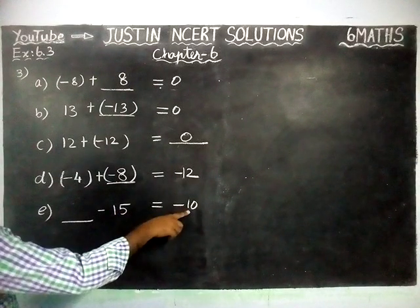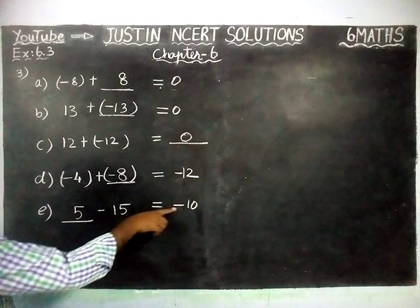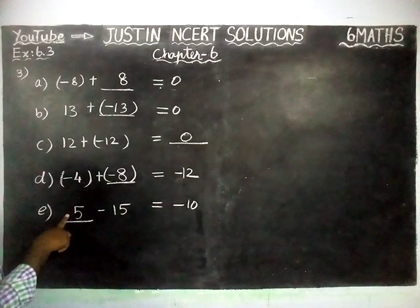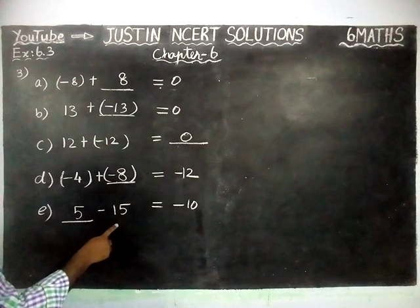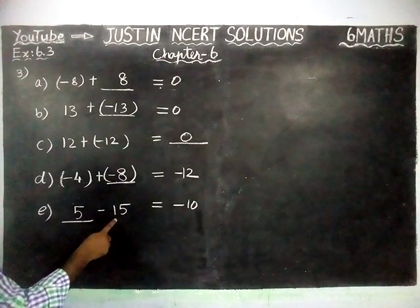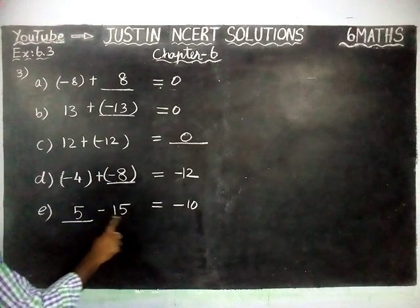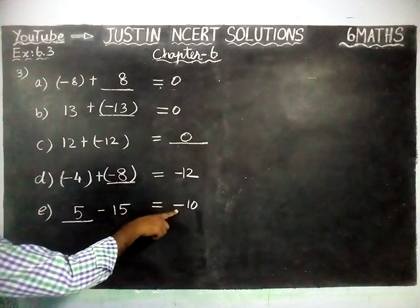And here, in the answer we got a minus sign. So definitely this number will be a positive number. Now, this is plus 5. This is minus 15. Signs are different. We have to find the difference. Difference is 15 minus 5 equals 10. And in front of the greatest number, minus sign is there. So we have given minus.